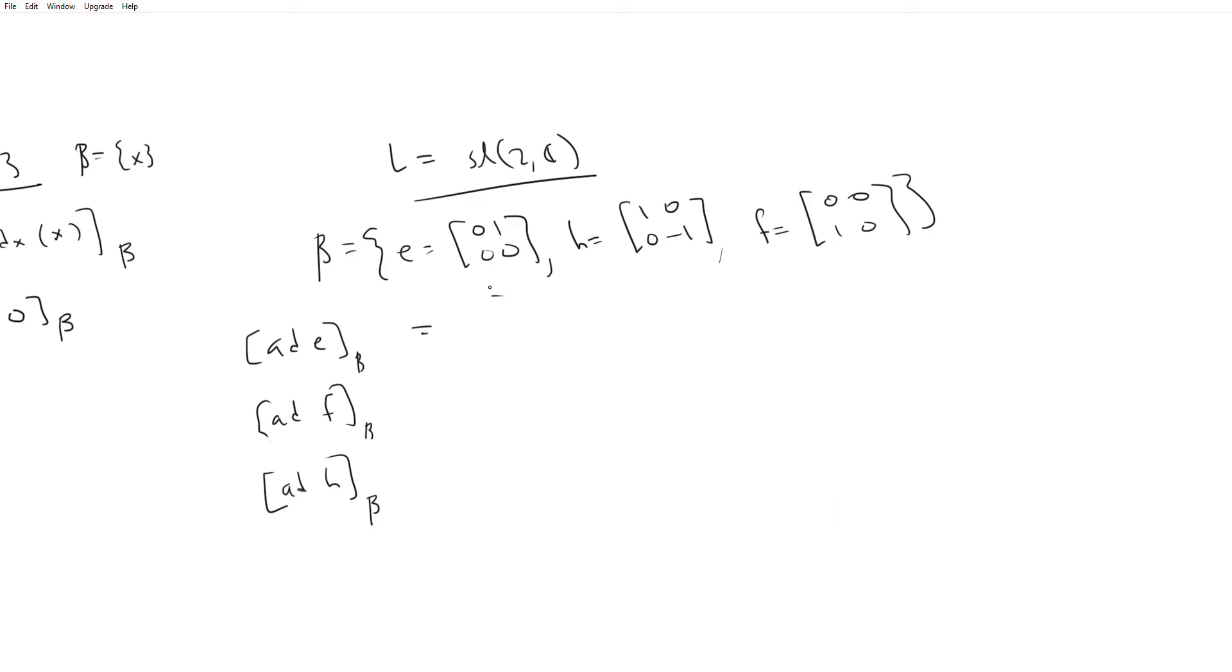So ad(E) is going to look like this. It's just going to be ad(E) acting on E, ad(E) acting on H, and then ad(E) acting on F. And so if you recall the commutation relations for this that we saw in the last video, what we had is that E bracket E, that's 0, we know that always. E bracket H is equal to minus H bracket E. So this thing is equal to E bracket H, which is equal to minus H bracket E, which is equal to minus 2E. So what we get is it's equal to minus 2E, so this should be minus 2E. And so we get a minus 2 here, 0, 0.